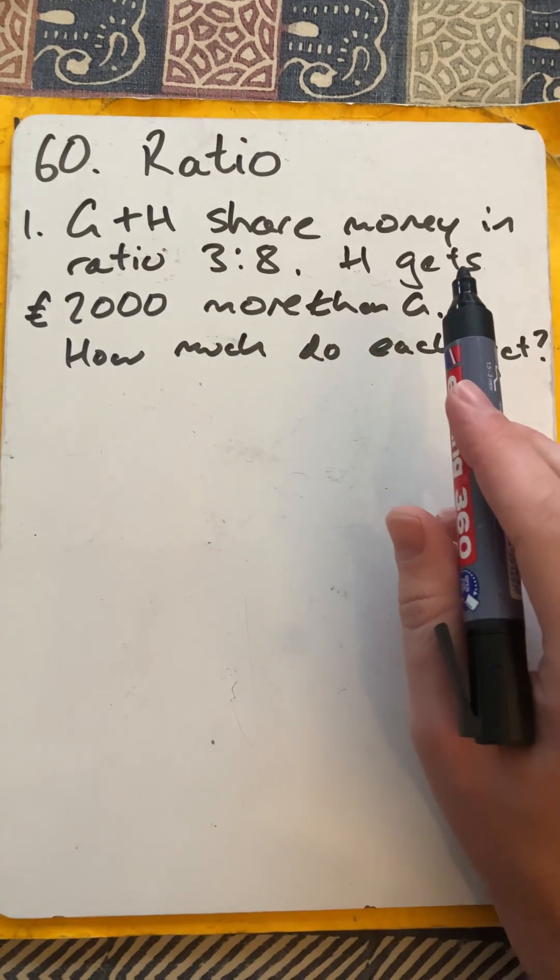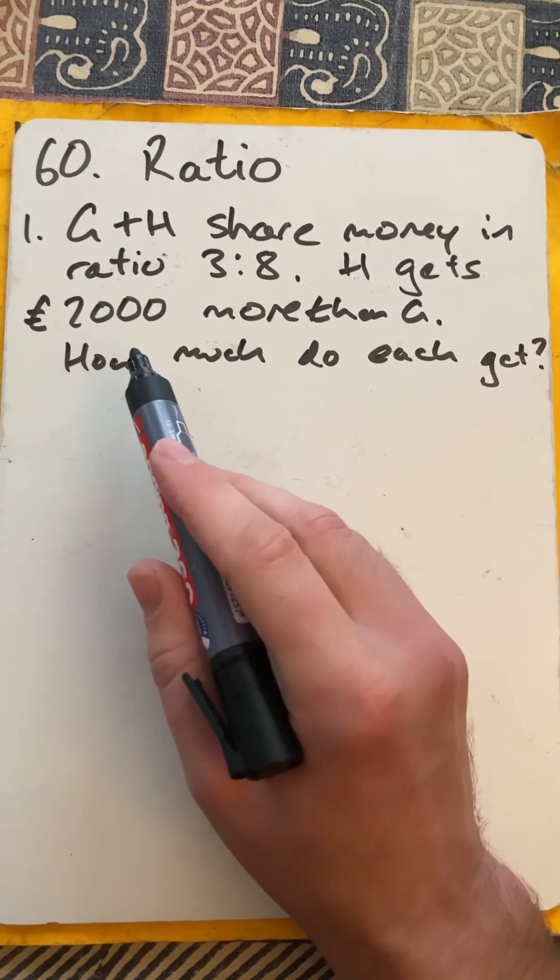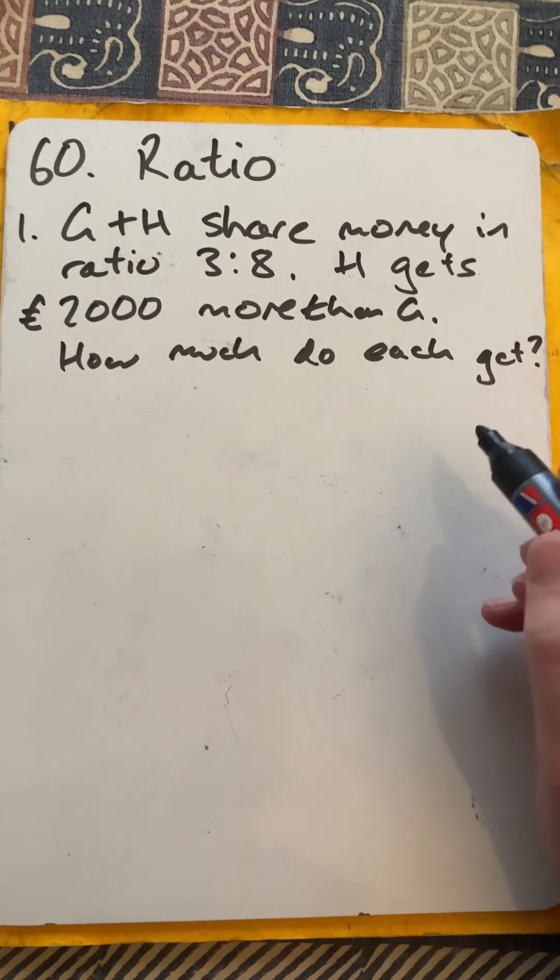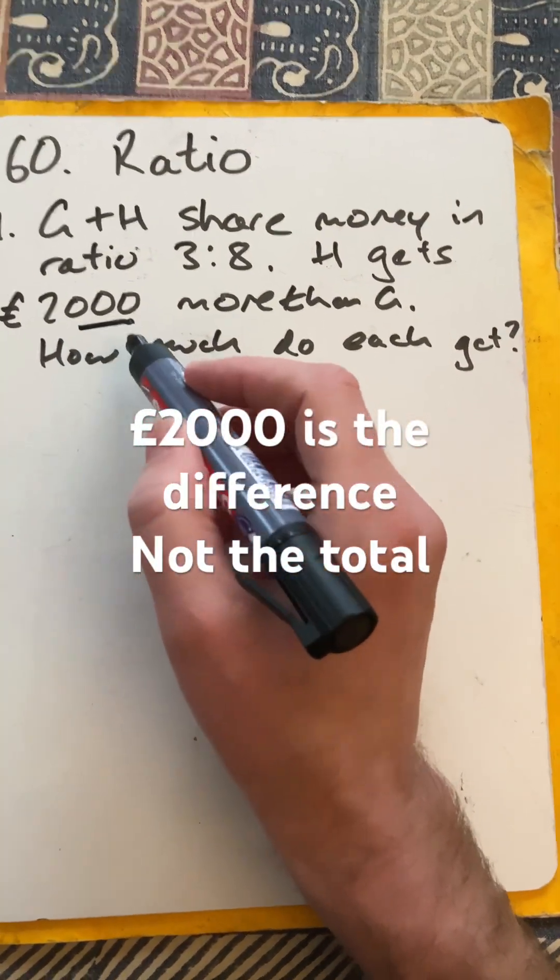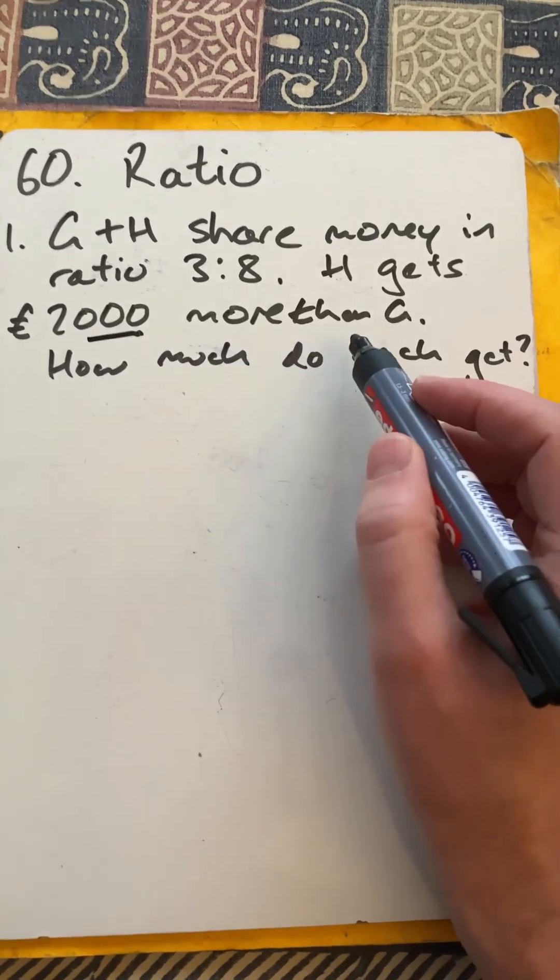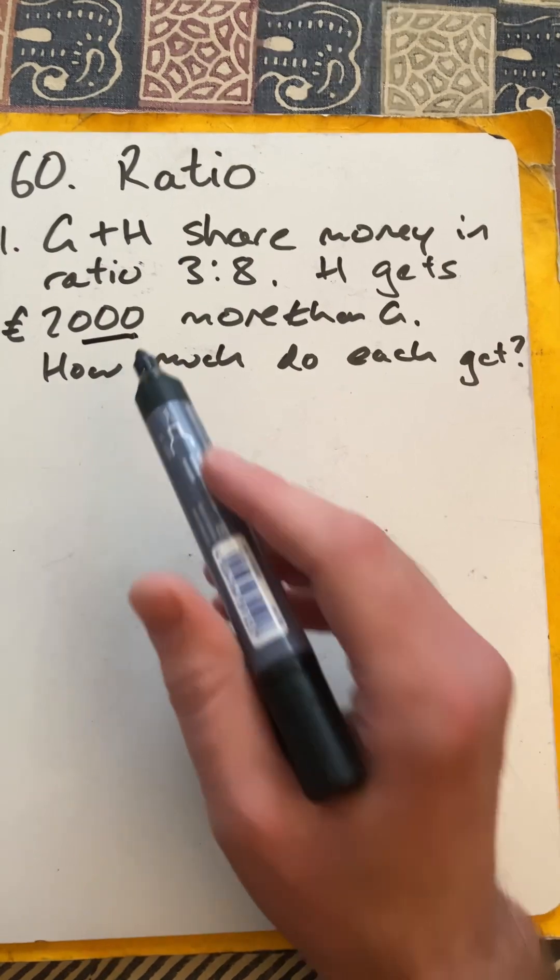So two people, G and H, share an amount of money in the ratio of 3 to 8. Now H gets £2,000 more than G. So how much does H get? So we don't know the total. £2,000 is not the total. £2,000 is in fact the difference because it says more than. Sometimes we're given the total, sometimes we're given one amount, but here we're actually given the difference.